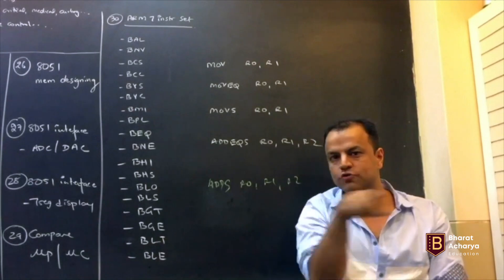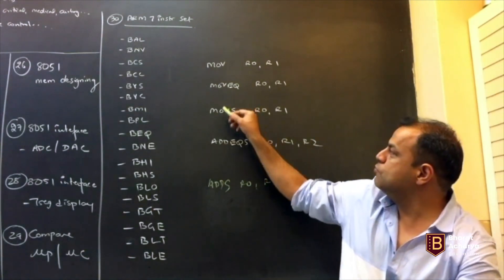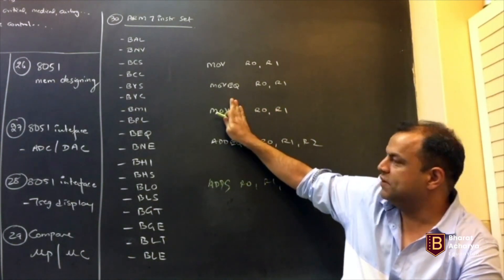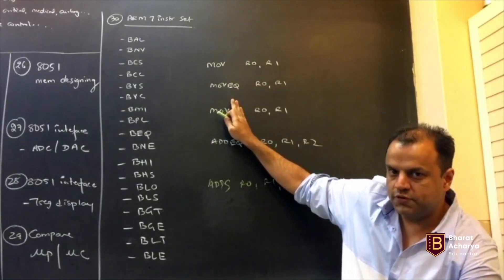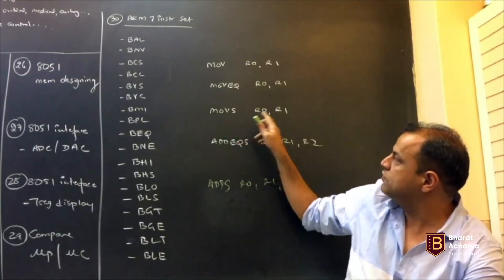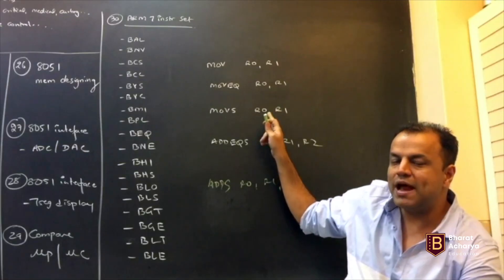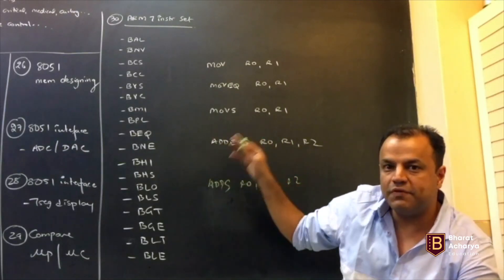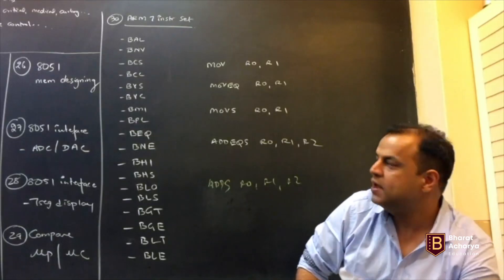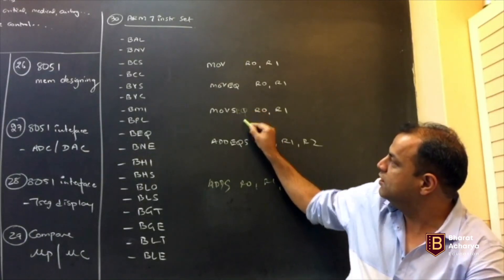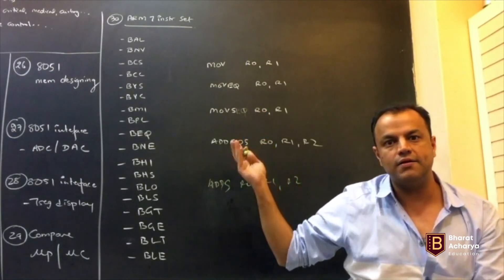Please tell me, did you understand this? So that's what the S does. So moves. Move will move. Moves also moves. But the difference is when you write MOVES, R1 will go to R0 and based on that value, the flags will be affected. If the value is negative, the negative flag will become 1 and so on.